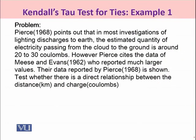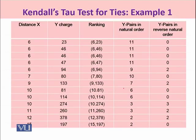I will take a real-life example to show how to calculate the Kendall-Stuart test when there are a significant number of ties in both X and Y. This is a problem taken by Pierce in 1968. He pointed out that in most investigations of lightning discharges to earth, the estimated quantity of electricity passing from cloud to ground is around 20 to 30 coulombs. Pierce cites data from Mies and Evans (1962) reporting much larger values. We are required to test whether there is a direct relationship between distance (in kilometers) and charge (in coulombs).